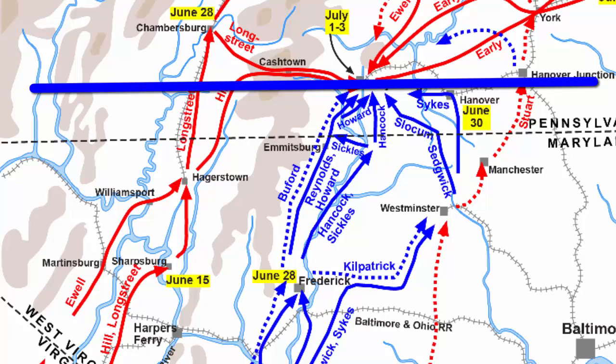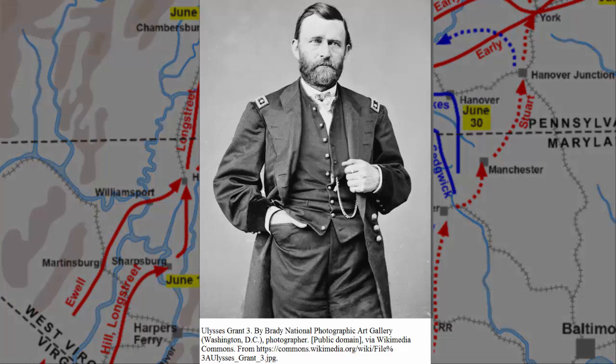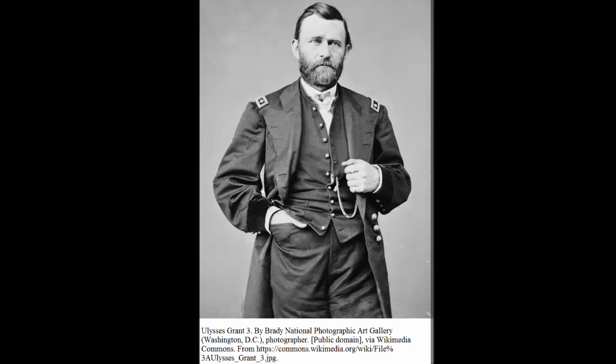Unlike Lee, Ulysses S. Grant essentially worked his way up through the Union Army's military brass with his aggressive tactics and reputation for accepting nothing less than unconditional surrender. It was Grant's relentless and dogged pursuit of the rebels that eventually resulted in the capture of Richmond, the capital of the Confederacy.